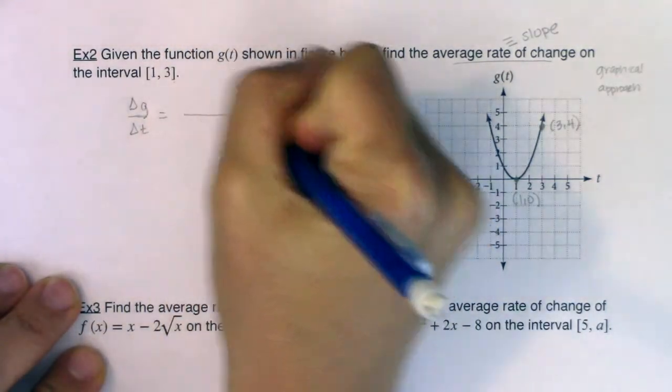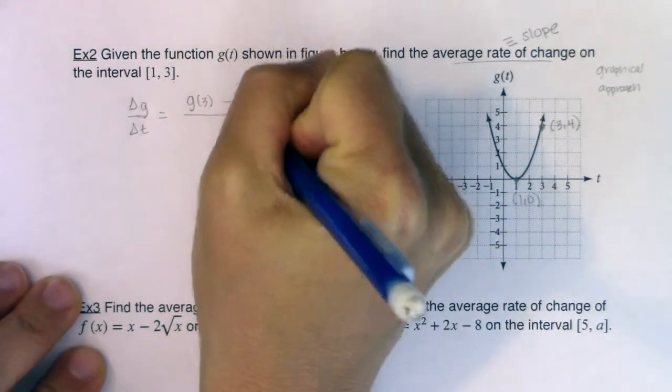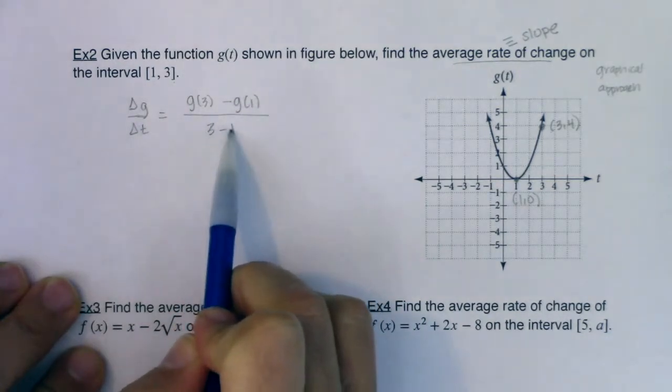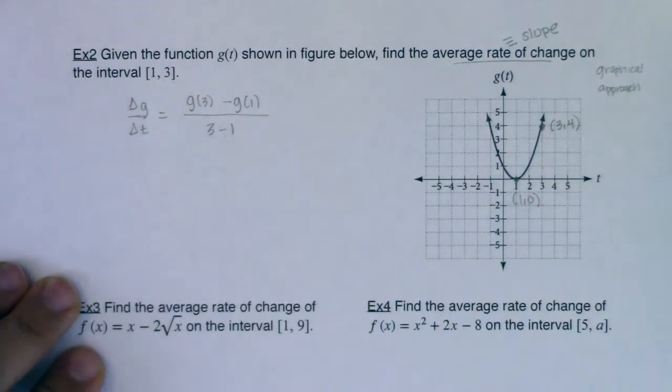So this ratio would be g of 3 minus g of 1 over 3 minus 1, right? The change in the y values over the change in the x values, or the change in output in ratio to the change in input.